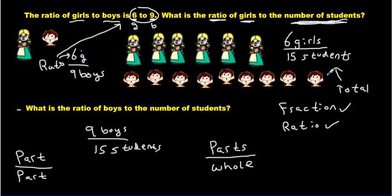Both of those numbers represent a part of the picture. 6 girls, that's not the whole thing. That's just a part of the picture. Whereas 9 boys is also not the whole thing. It's just a part. So we have a part compared to another part. It's called a part to part ratio.